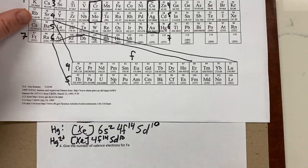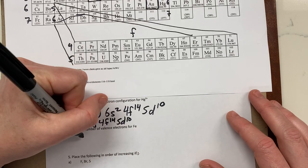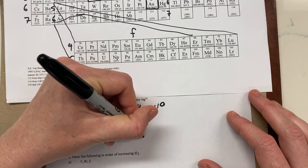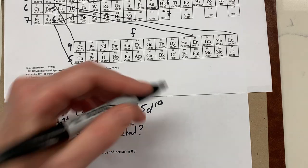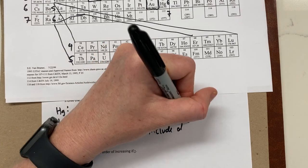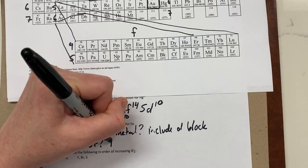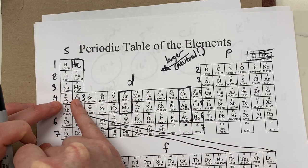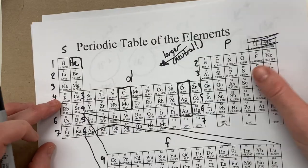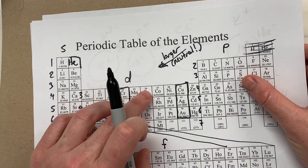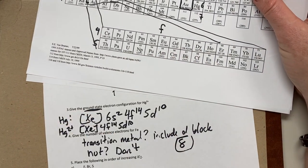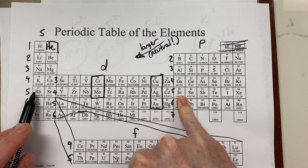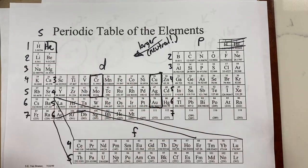Number four: give the number of valence electrons for iron. You have two options — is iron a transition metal? It is, so you include the d block. Counting from the start of its period through the d block: 1, 2, 3, 4, 5, 6, 7, 8 electrons — iron has 8 valence electrons. For a non-transition metal like indium, you'd skip the d block and just count 3.